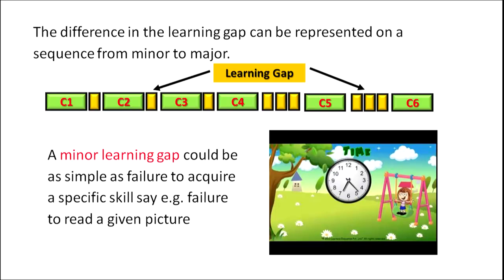The learning gap can be represented on a sequence from minor to major. If you look carefully, you have content fragments C1 through C6, and in between the content there are small yellow blocks representing the learning gaps. Between C1 and C2 there is a small gap; between C4 and C5 the gaps are larger. So learning gaps can be small or large. A minor learning gap could be as simple as failure to acquire a specific skill — say, failure to read a given picture, or failure to make a connection between heavy and light in relation to water, or how seeds are dispersed, or inability to grasp a story or understand a comic strip.